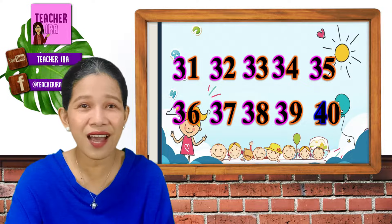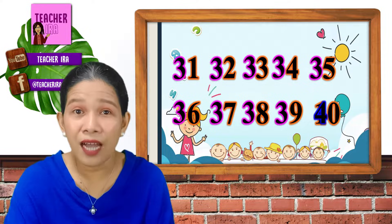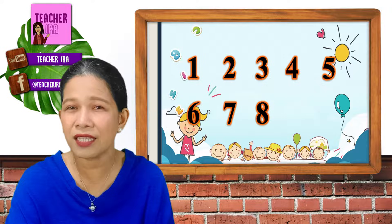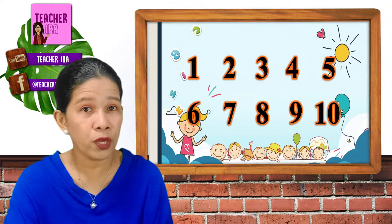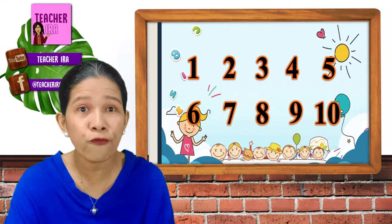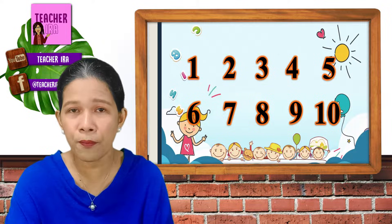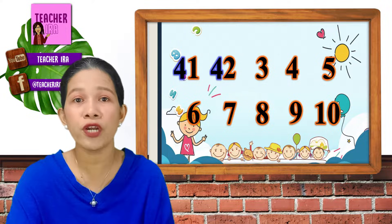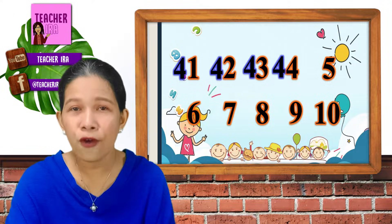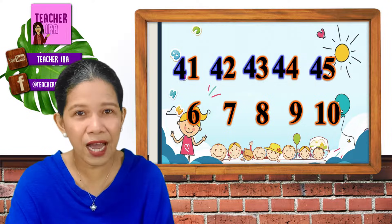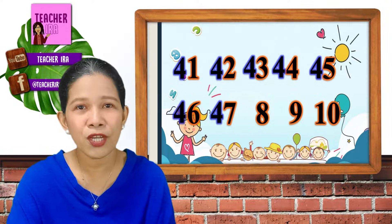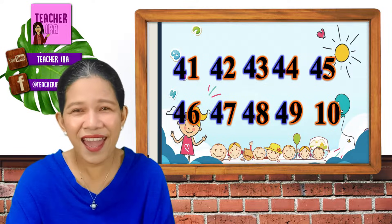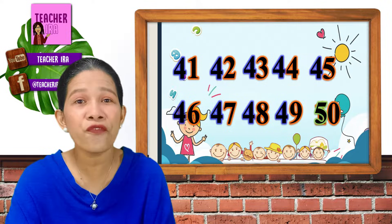Wow, we're almost done. Now, we'll have another 1, 2, 3, 4, 5, 6, 7, 8, 9, and 10. And we will just add 4 at the beginning of each number. So, you will have 41, 42, 43, 44, 45, 46, 47, 48, 49, and 50.